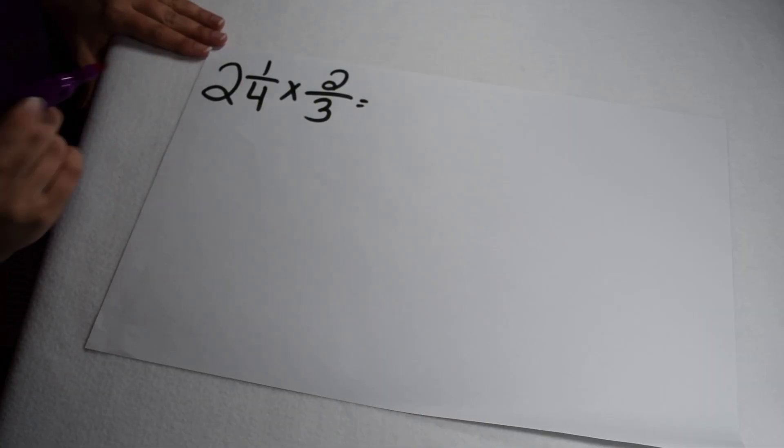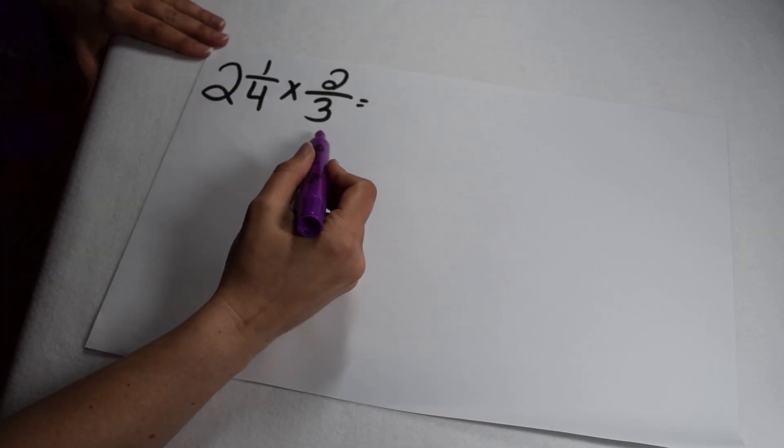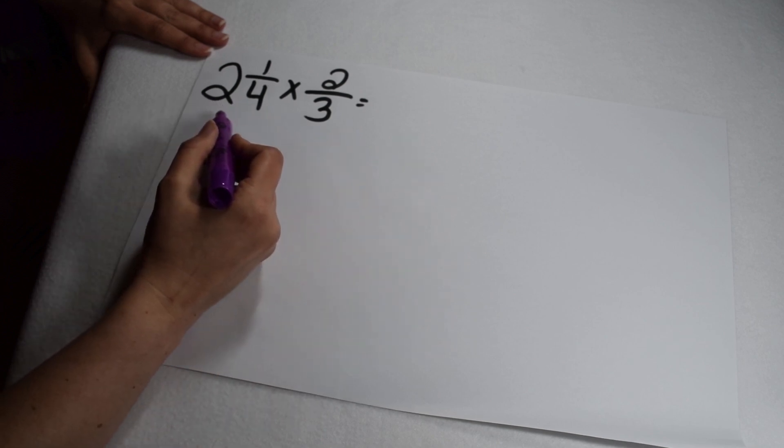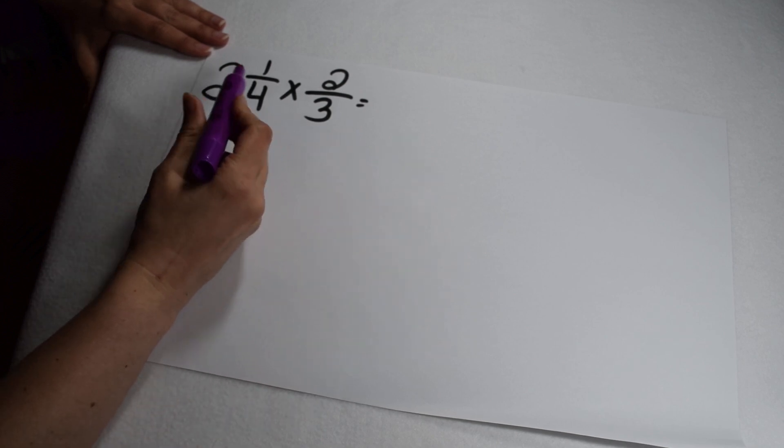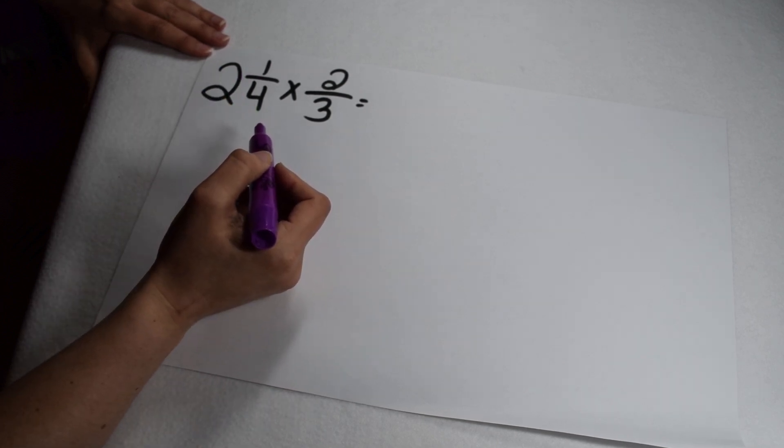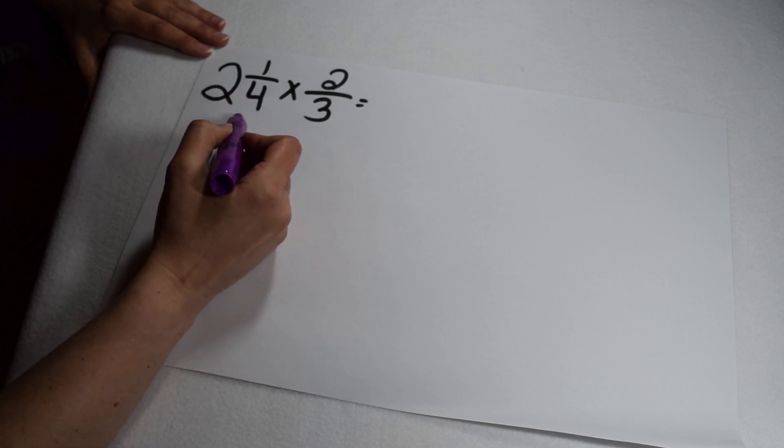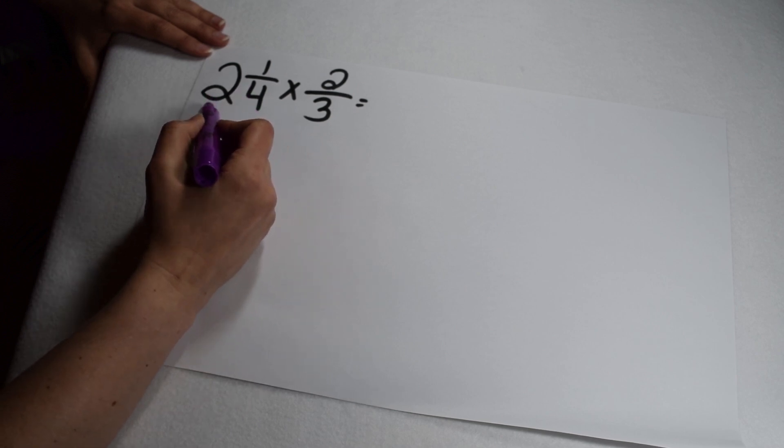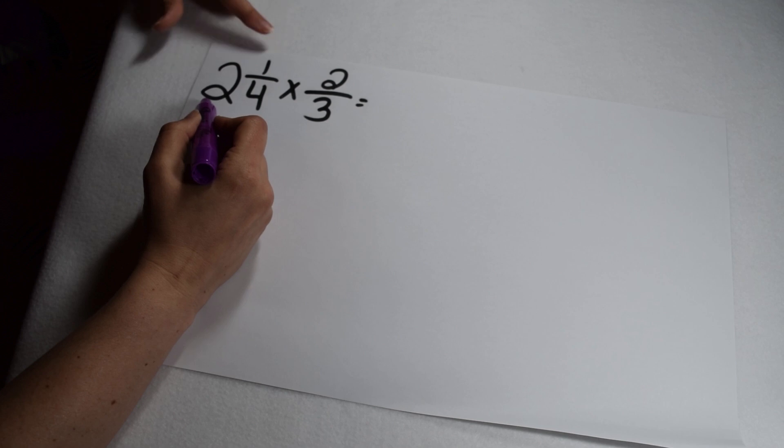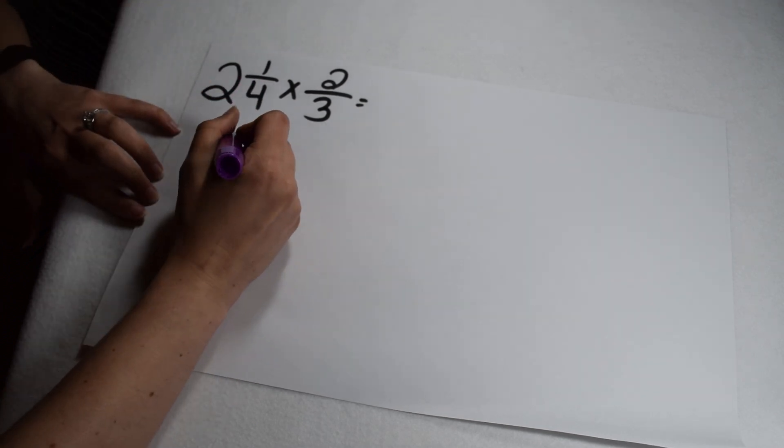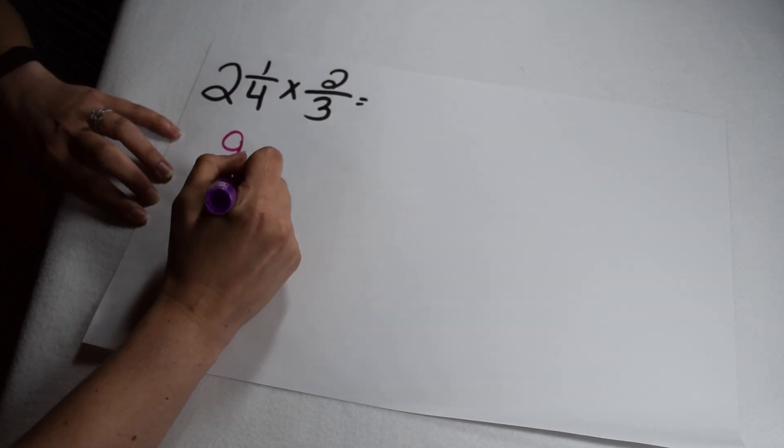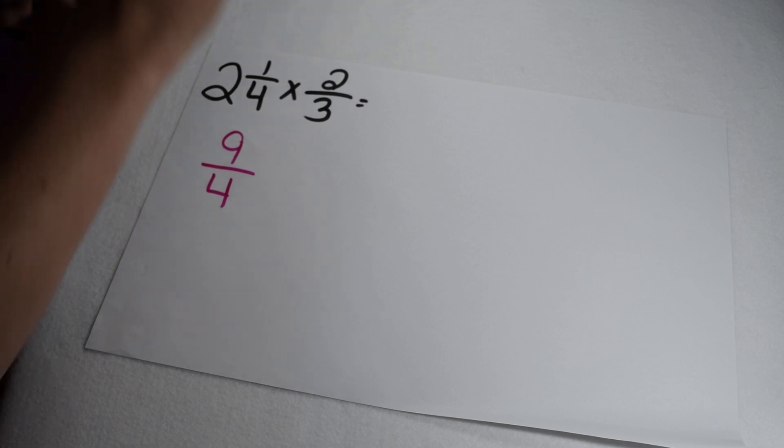We're going to multiply two and one-fourth times two-thirds. The first thing we need to do is take our mixed number to turn it into an improper fraction to make sure the two gets multiplied with the rest of the problem. To do that, I'm going to multiply my denominator times my whole number to break it into pieces. So four times two gives me eight pieces, plus the one I already had gives me a total of nine. So two and one-fourth is equivalent to nine-fourths.